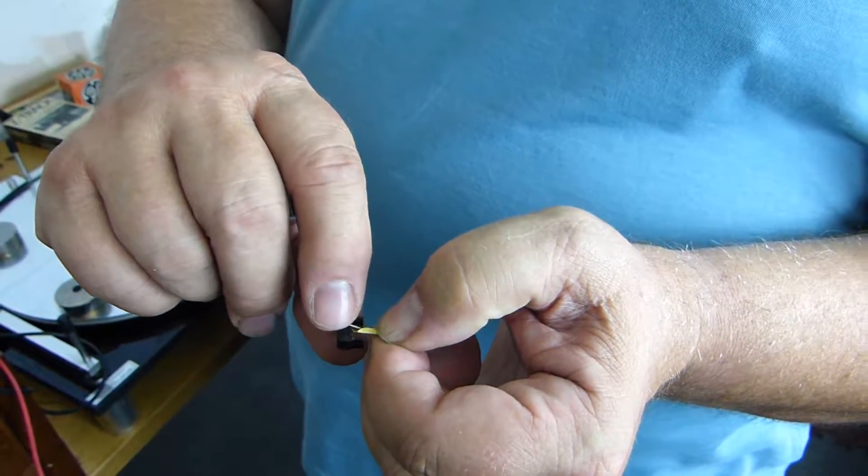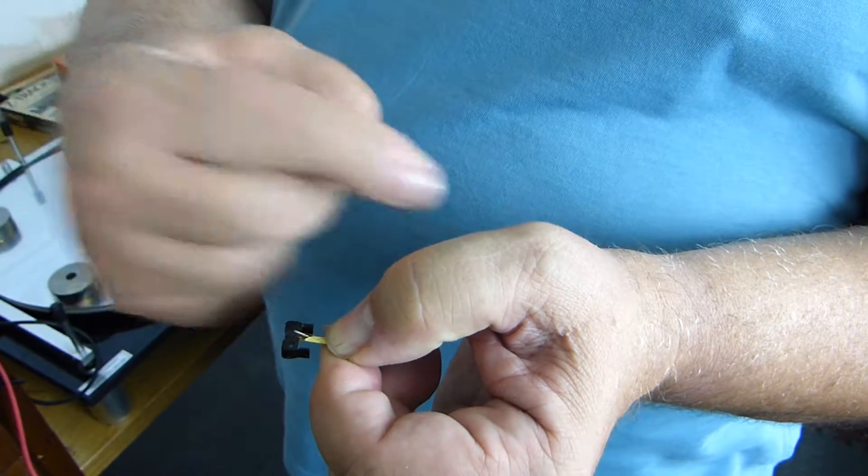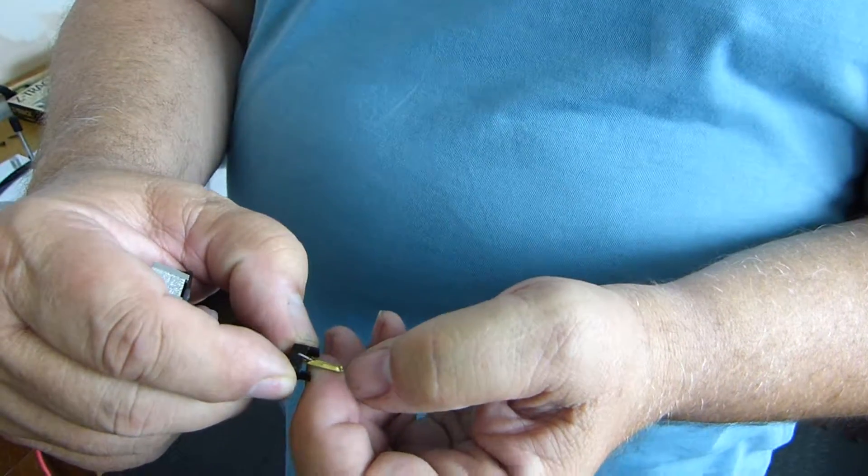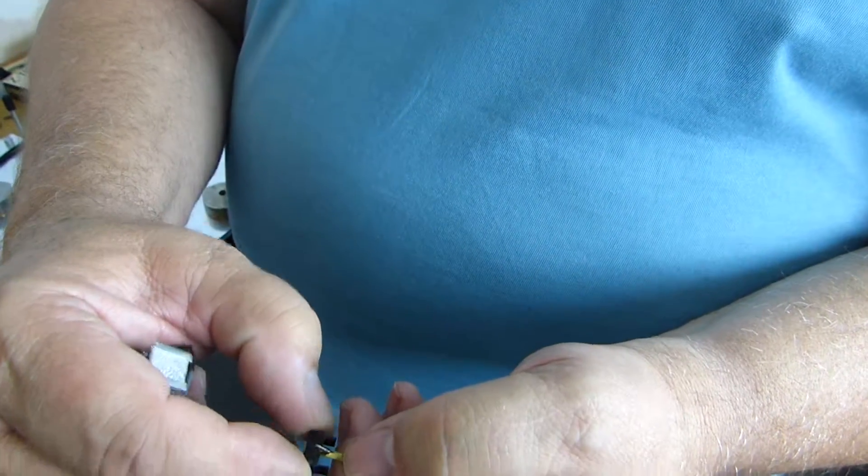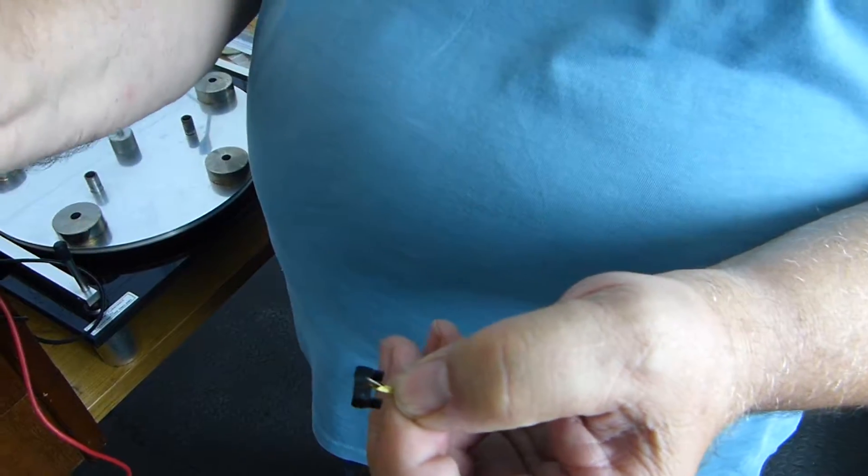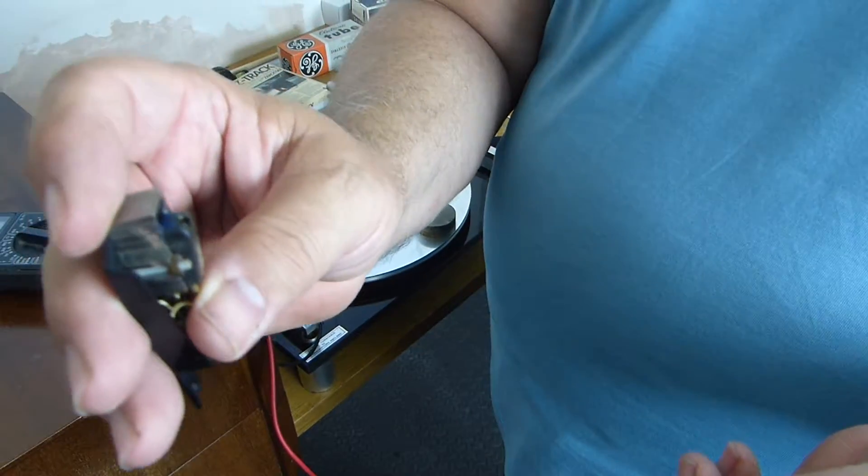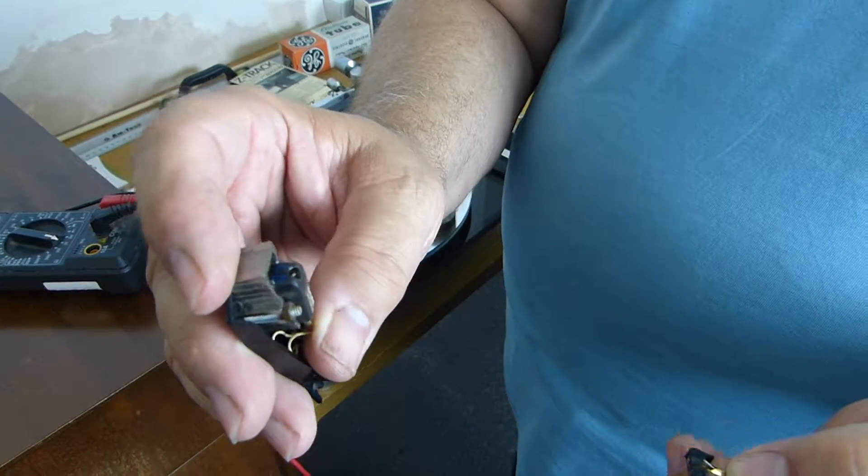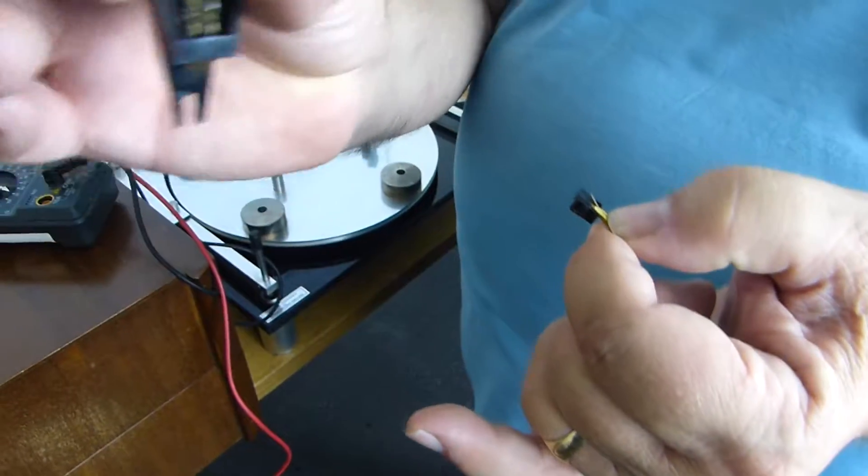The stylus moves up and down on the rubber suspension, but on the other end of that cantilever, down inside here, it's that which is moving inside the magnetic field, generating the very small voltages. So it's not a moving part in here.